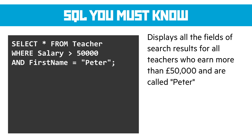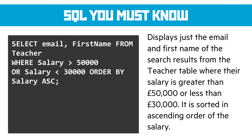Slightly changing that, in this SELECT query I've specified which fields I want to see. I only want to see the email and first name from the teacher table where their salary is greater than £50,000 OR less than £30,000, and I want them ordered by salary from smallest to biggest.